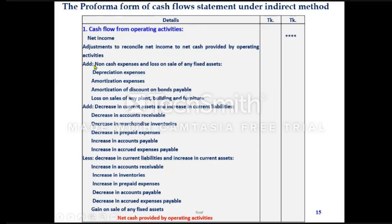Add non-cash expenses and loss on sale of any fixed asset — like depreciation expenses, amortization expenses, amortization of discount on bonds payable, and loss on sale of any plant, building, or furniture.